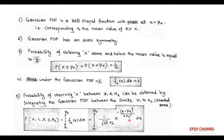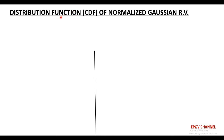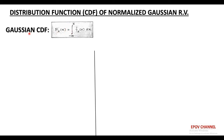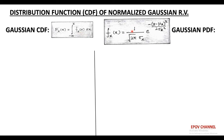Here, mu is called the mean and sigma squared is called the variance of the Gaussian PDF. Next, we talk about the cumulative distribution function of a normalized Gaussian random variable. Let us consider random variable capital X treated as Gaussian. The Gaussian CDF can be recovered from the Gaussian PDF using the formula: capital F(x) equals the integral of the Gaussian PDF with respect to dx, taking limits from minus infinity to x. Here, capital F is called the Gaussian CDF and small f is called the Gaussian PDF.